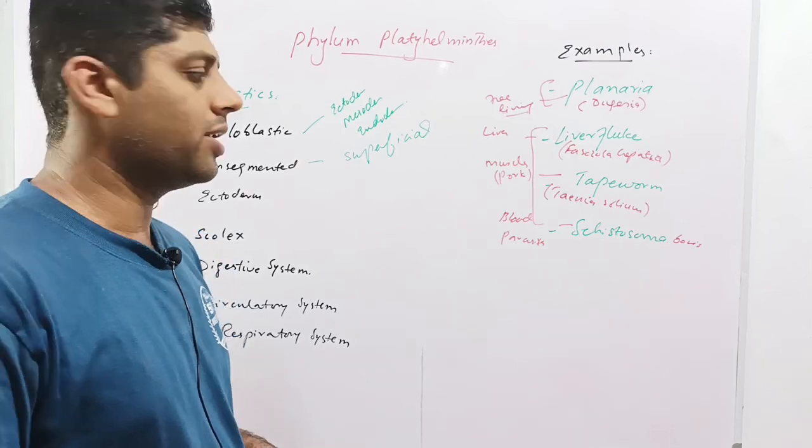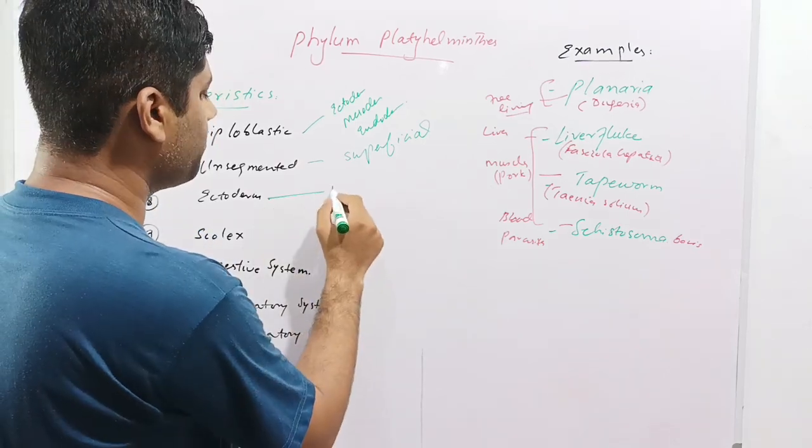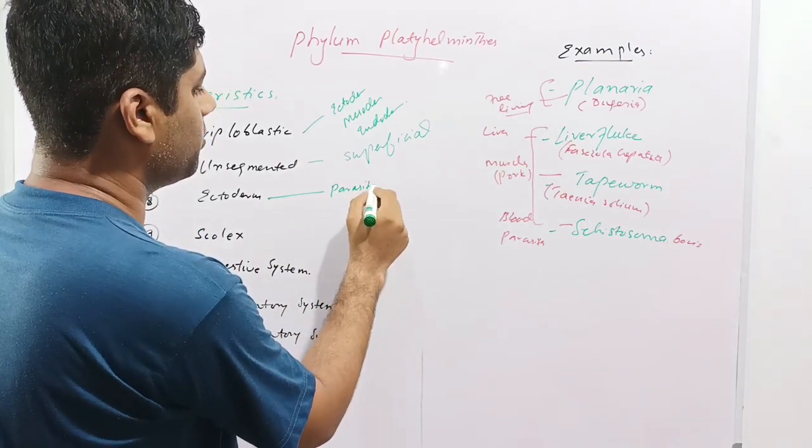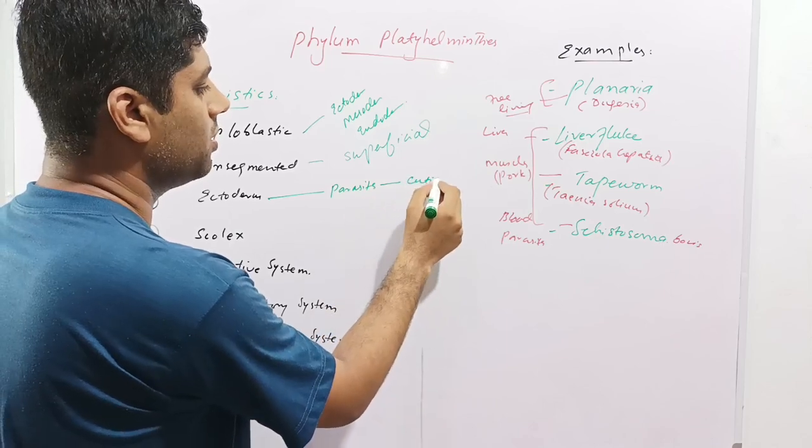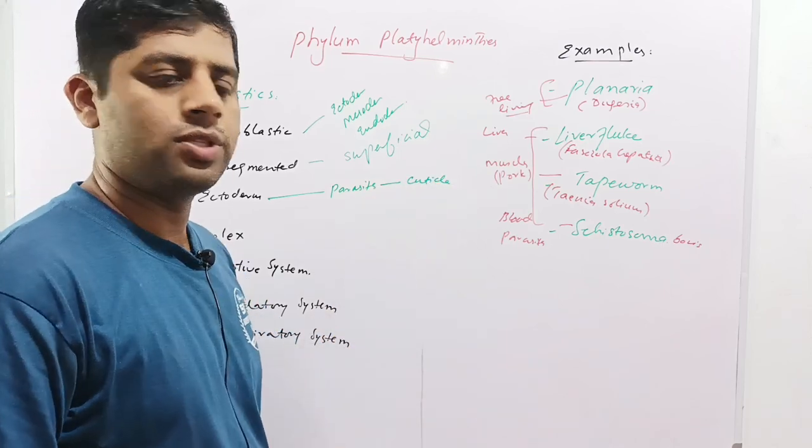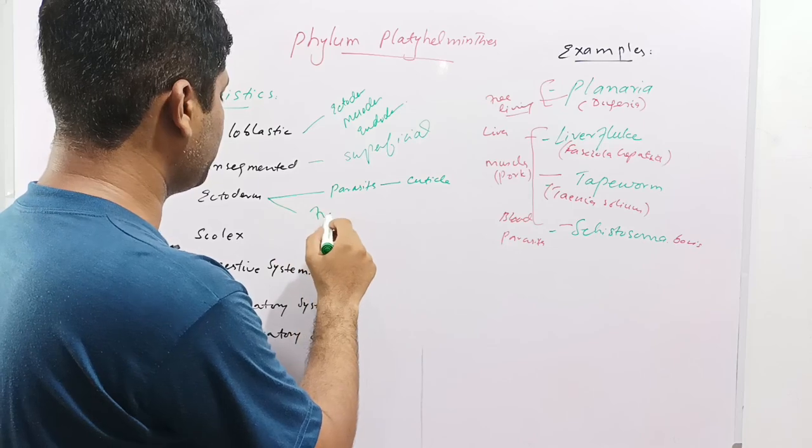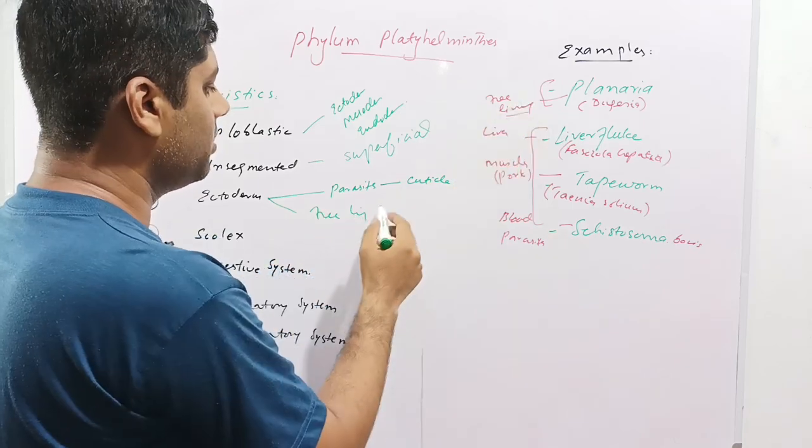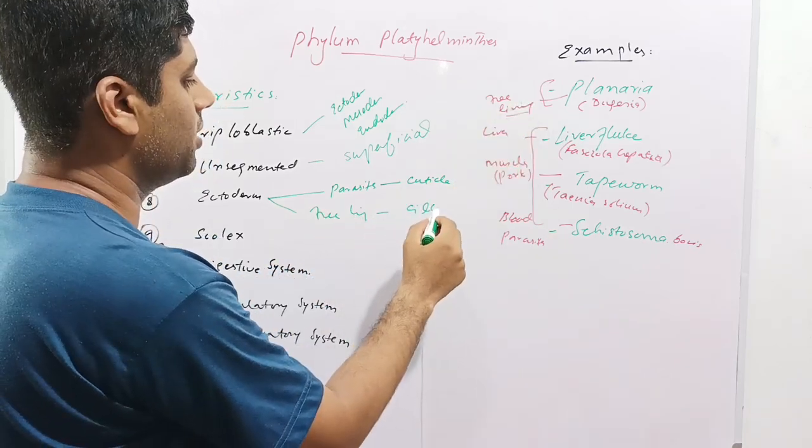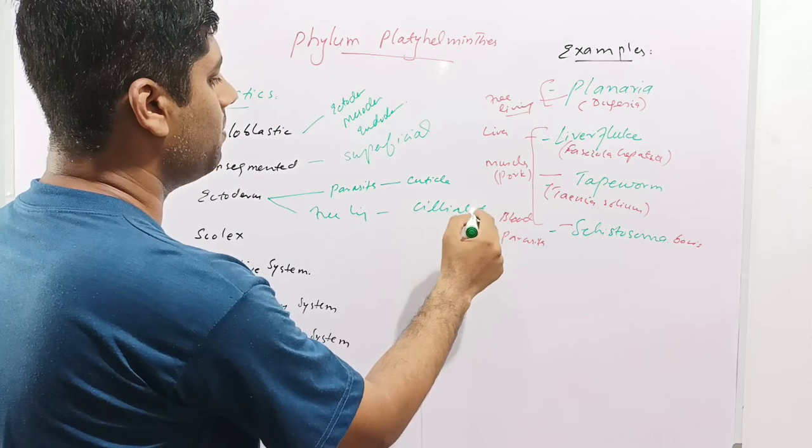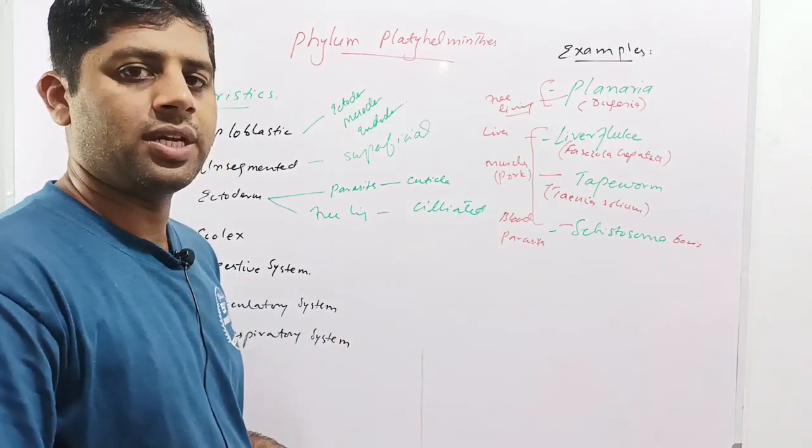The ectoderm is the outer layer of these animals. In parasites, this ectoderm is covered by cuticle for protection from the host immune system. In free-living organisms like planaria, this ectoderm is ciliated, and these cilia help in locomotion of planaria in water.